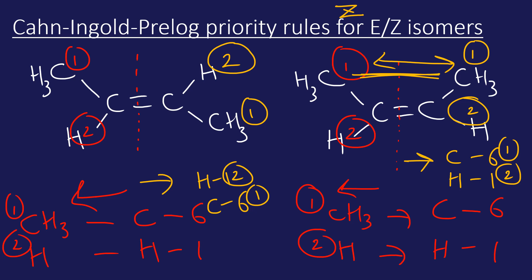And if the number one priority groups are not together - they're opposite, as they are in this example here - that is the E isomer. Again, I believe that is entgegen, which means opposite in German, but someone can correct me if I'm wrong. So that's our E and Z isomers, assigning priority rules based upon the atomic number.